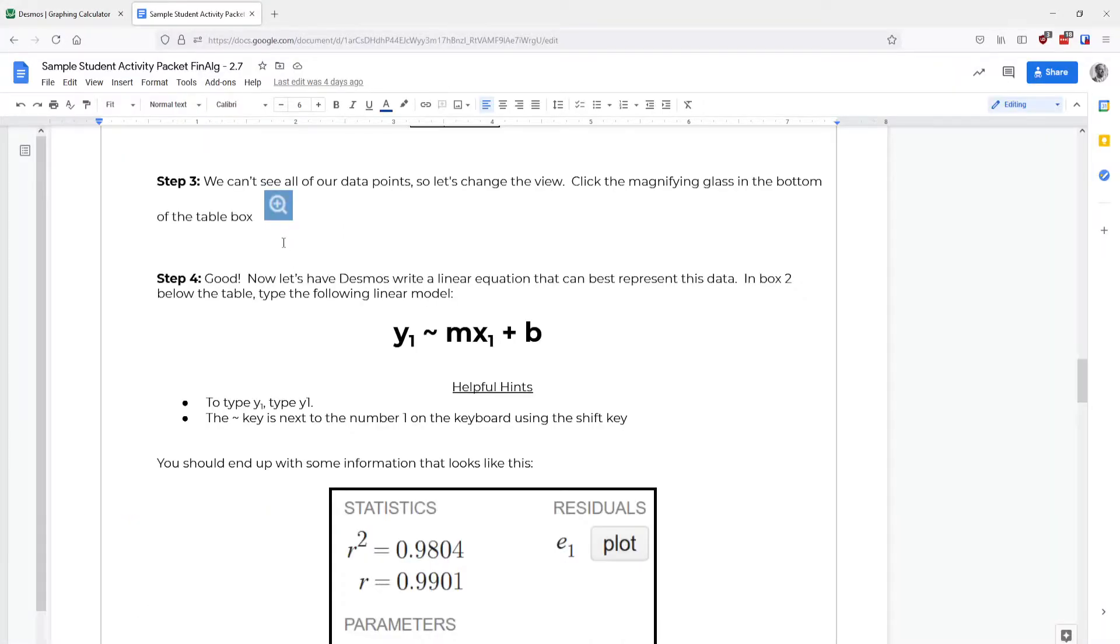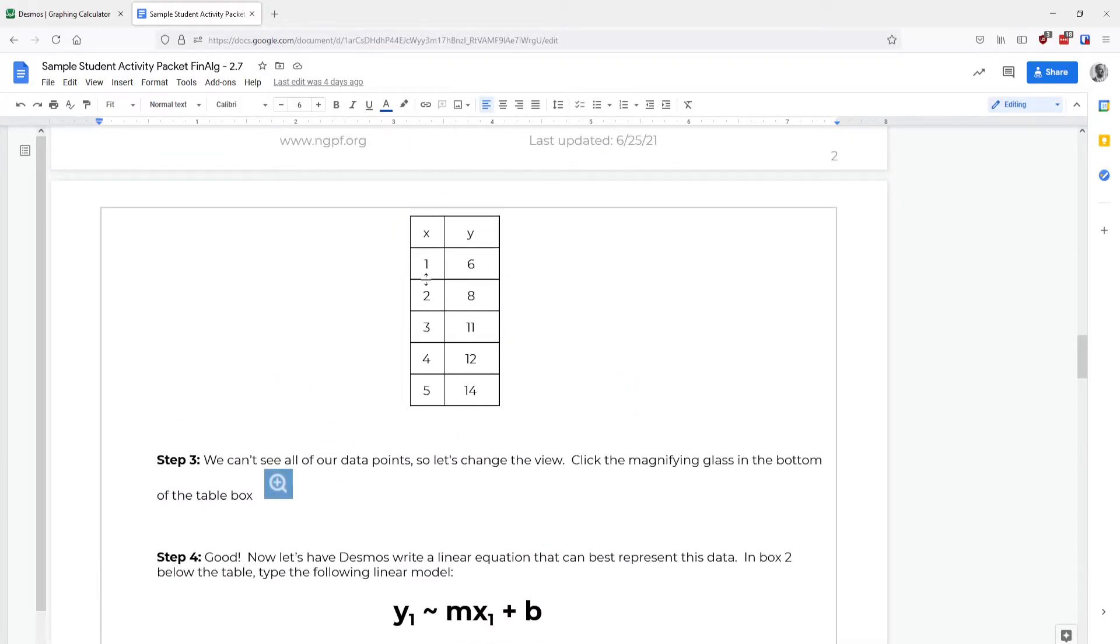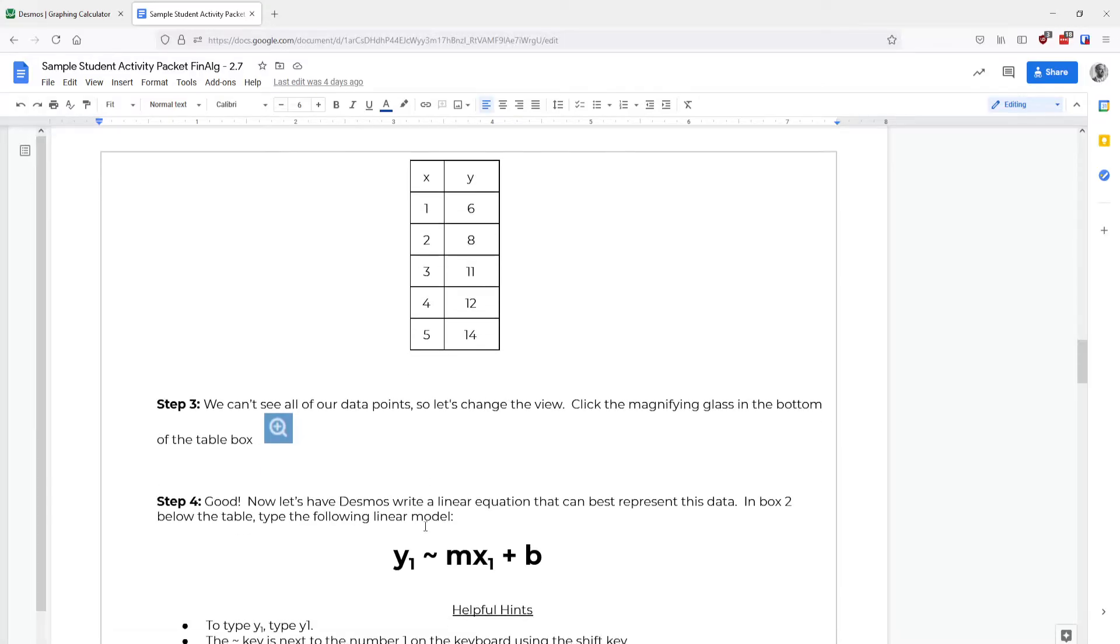And then we can use this equation to make predictions about this data. So our table only has the numbers one through five as inputs. We put in an X value of one. We got back a six. We put an input of two. We got back an eight. We don't know what happened at X equals 10.